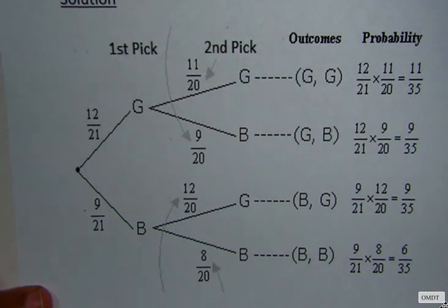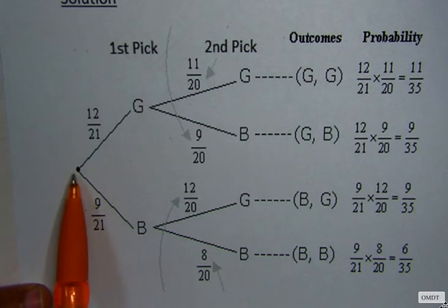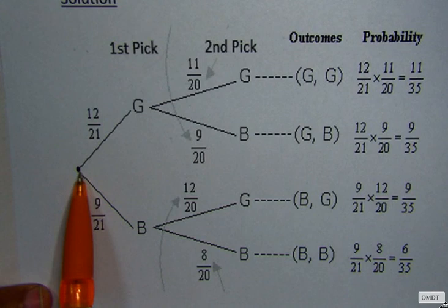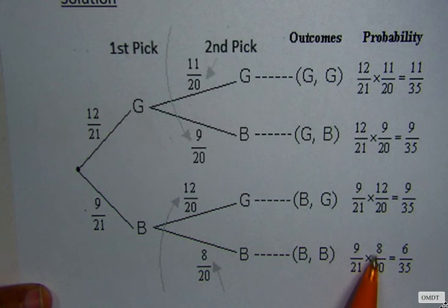Our question says the probability that both marbles are blue. So we have to follow this branch, blue, and this, the other branch, blue. So blue blue, our probability is 9 over 21 times 8 over 20. That gives us 6 over 35.